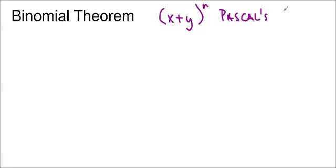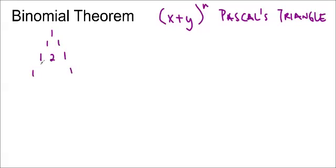Pascal's triangle — if you don't remember how to construct it, basically we start with a 1 and a 1, then we have 1's on the outside and we add up the numbers above. So 1 plus 1 is 2. We put 1's on the outside, and 1 plus 2 is 3, 2 plus 1 is 3. Then 1 plus 3 is 4, 3 plus 3 is 6, and 3 plus 1 is 4, and so forth. We can keep going — that's Pascal's triangle.